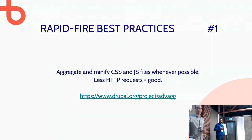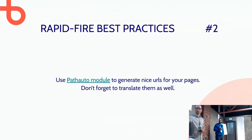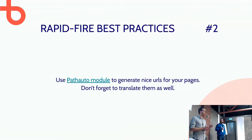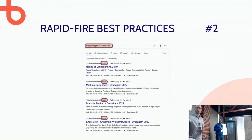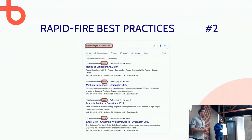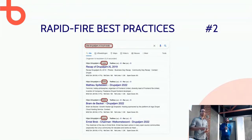It's small individual things that can have a big overall impact. You can also use the Pathauto module to generate nice-looking URLs for your pages. You want to translate those paths as well on multilingual websites — you don't want elements in the URL to be in a different language from the page content. This screenshot of the Drupal Jam website shows a lot of node IDs in URLs, which is not good SEO-wise — make sure they are proper URLs and not just node paths.